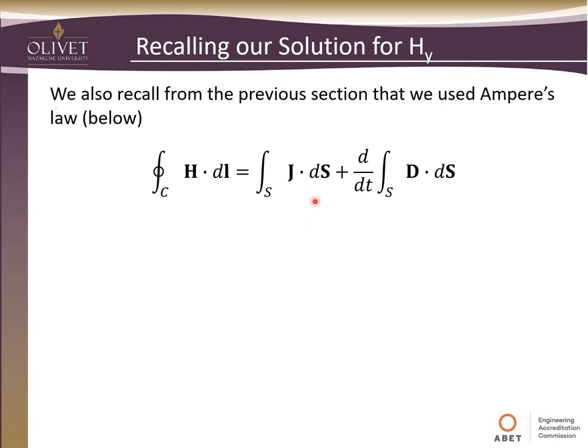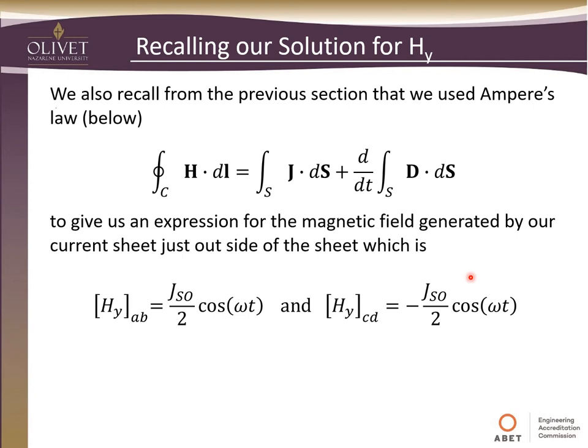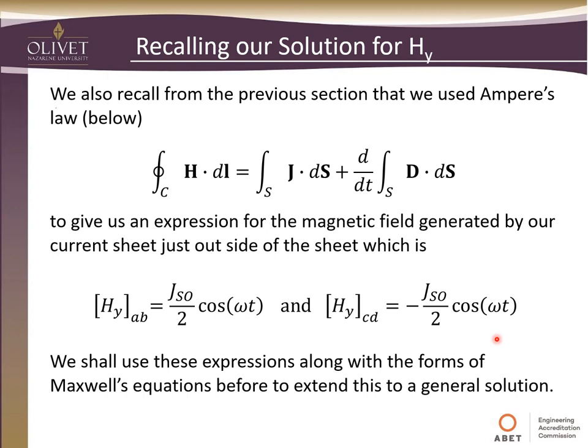We also want to recall from our previous section that we used Ampere's law in integral form: the magnetic field summed up along some closed path forming a surface in the middle — remember the bubble scenario — must equal all the current and displacement current varying with time, normal to and penetrating that surface. This gave us an expression for the magnetic field just to the left and right, in the negative Z and positive Z direction, just on each side of that current sheet.